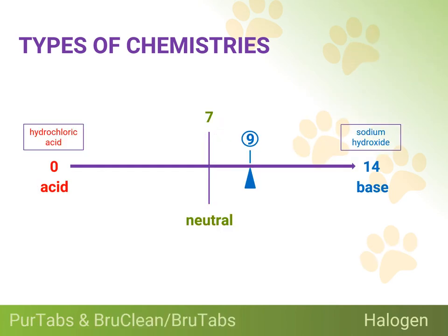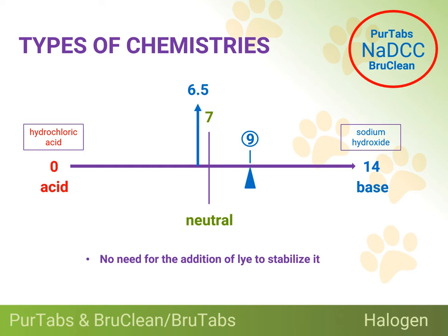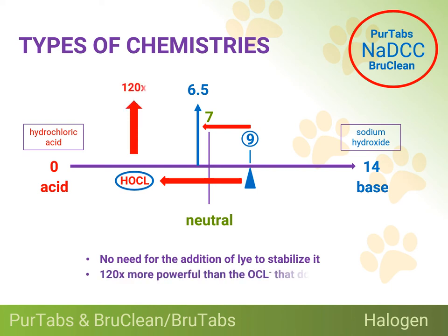The next chlorine compound in our list of halogens is NADCC — sodium dichloroisocyanurate — which is found in Pure Tabs and/or Brew Clean. Because of the unique formulation of this compound, there is no need for the addition of lye to stabilize it, as must be done with bleach. As a result, NADCC has a pH of 6.5, which is well below the 9.0 pH tipping point that determines which form of chlorine ends up being most dominant. In this case, most of it would be the hypochlorous acid form of chlorine, which is 120 times more powerful than the hypochlorite ion form of the compound that dominates in bleach. Consider some of these following bullet points.